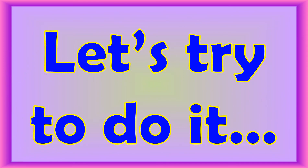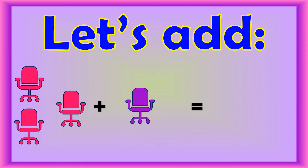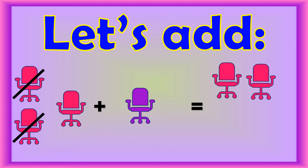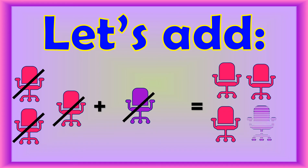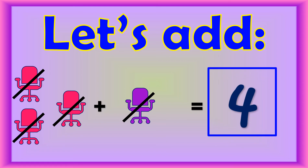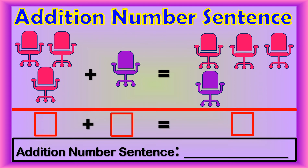Let's try to do it. Let's count the pink and purple chairs. One, two, three, four. There are four chairs in all. Let's write the addition sentence. First, count the pink chairs. One, two, three. Three pink chairs.